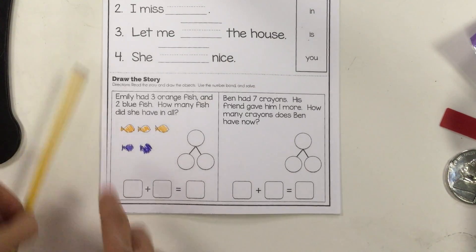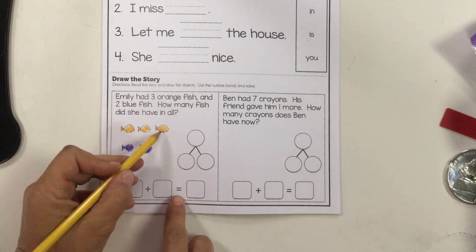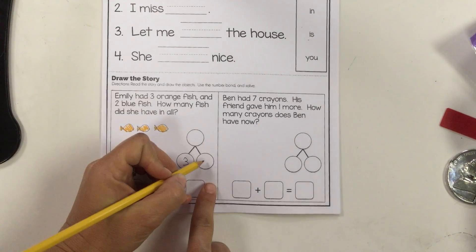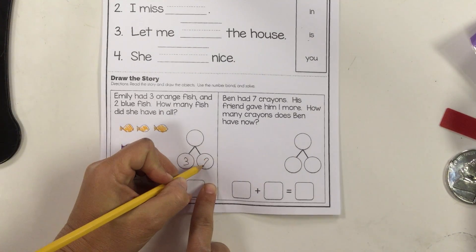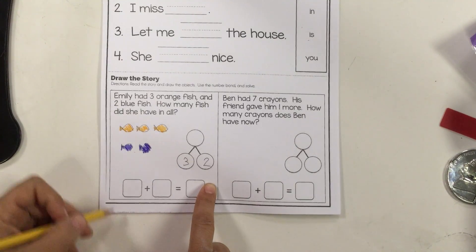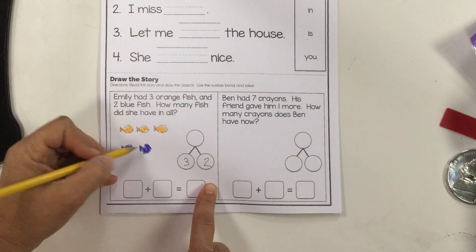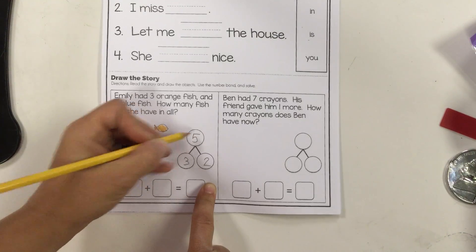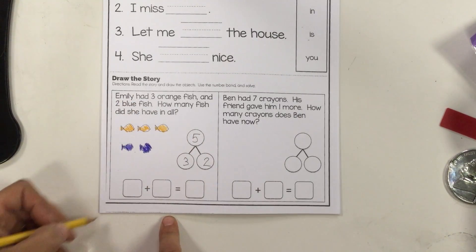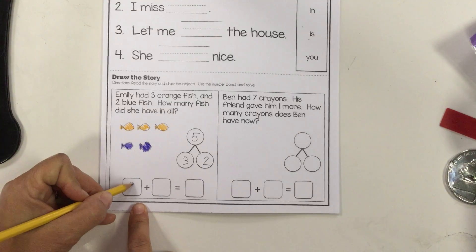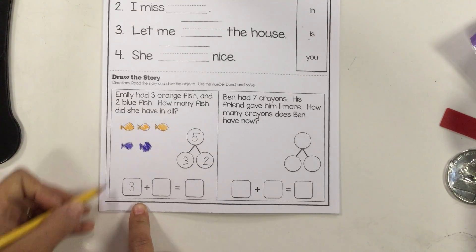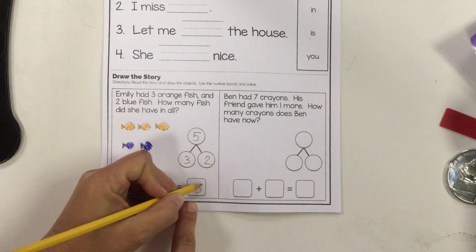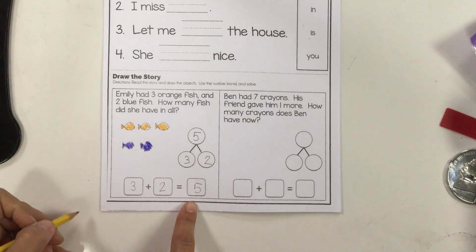So here we are. It says three orange fish, so I'm going to fill in one of the parts. Two blue fish — another one of the parts. And let's see: one, two, three, four, five in all. So that's my whole, and I'm going to put it up top. Then I'm going to write three plus two equals five.